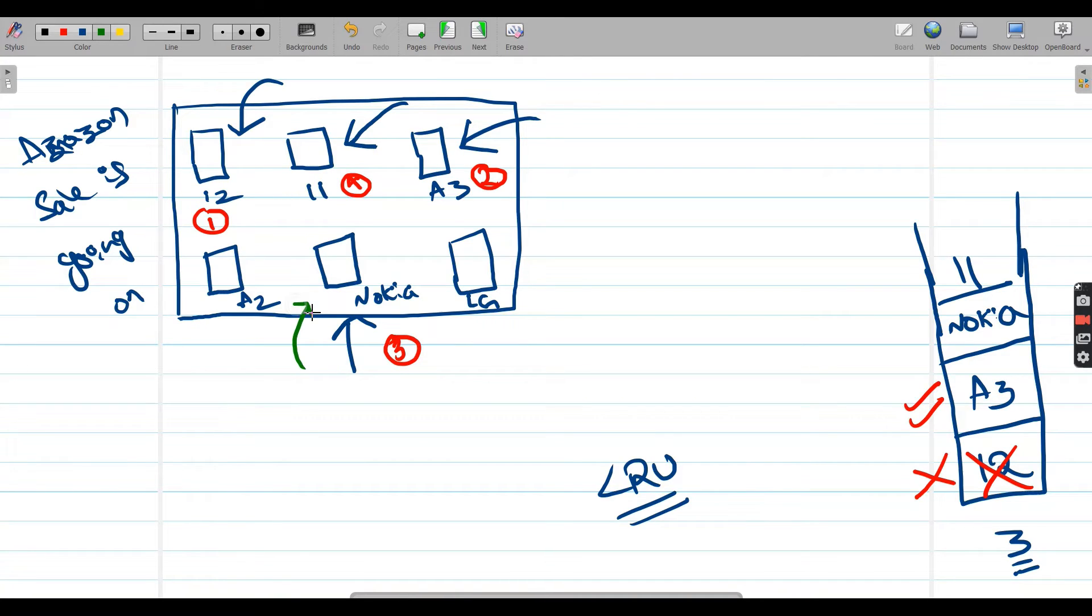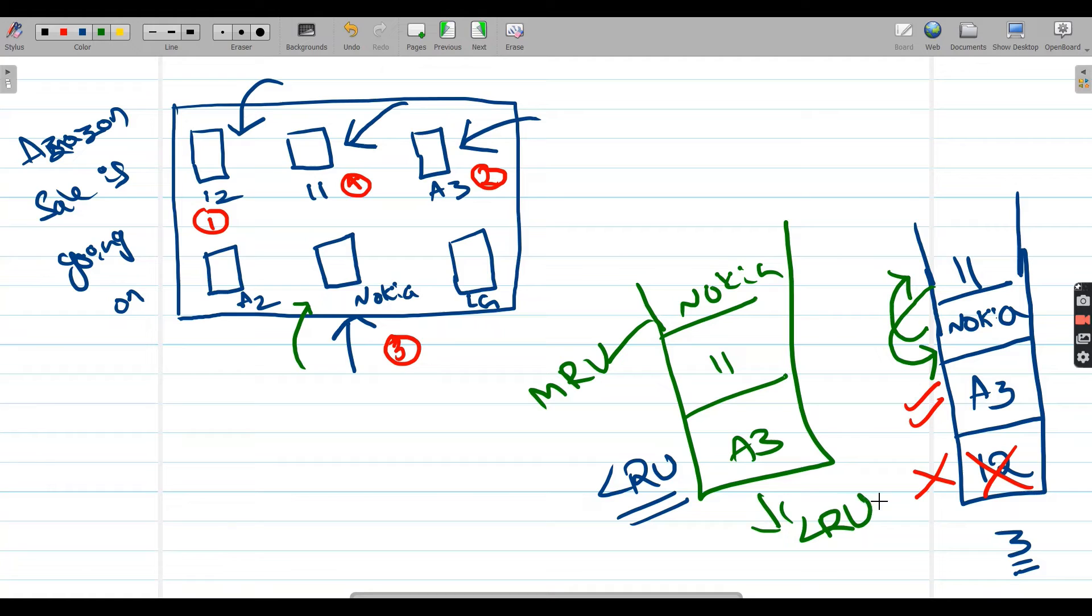But in the process of the sale, the demand for Nokia got increased suddenly. Now people are visiting Nokia more and more. So what happens here is we need to put Nokia to the top and we need to shift 11 down. That means my cache is going to be A3, 11, and Nokia. Here Nokia is going to be MRU, that is most recently used, and A3 is going to be LRU, that means least recently used. Now let's try to understand another case.